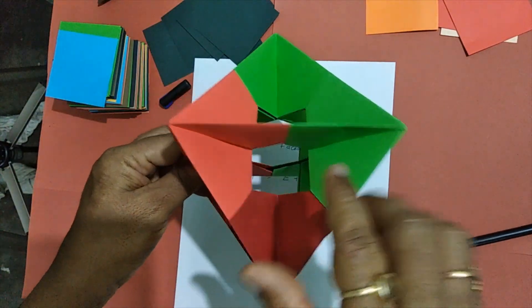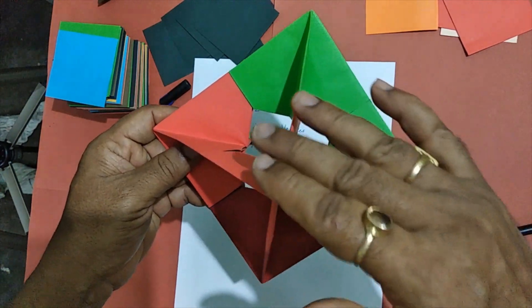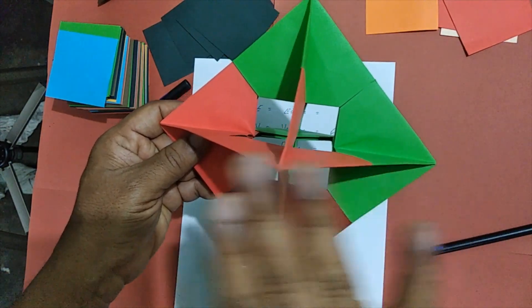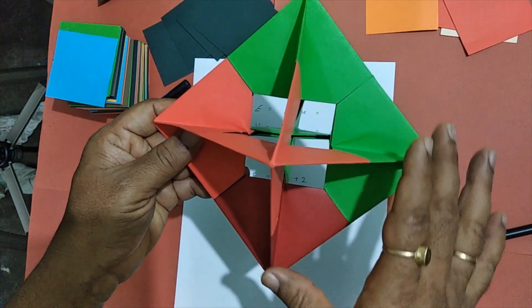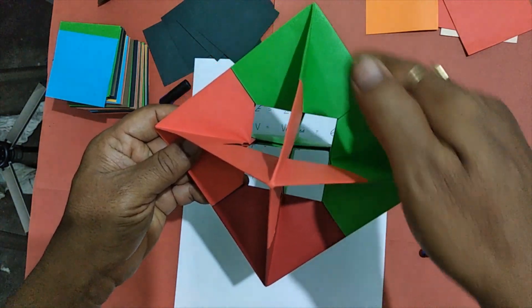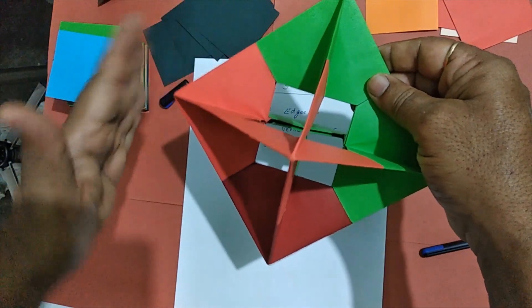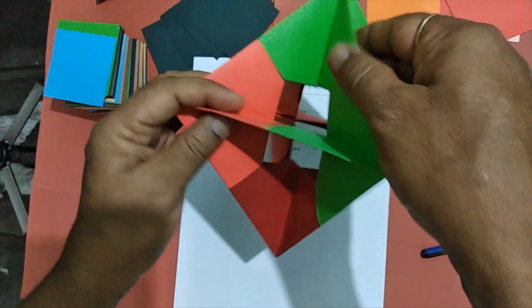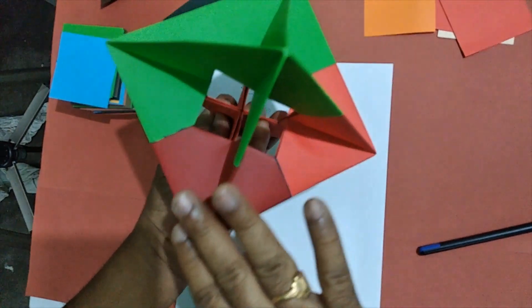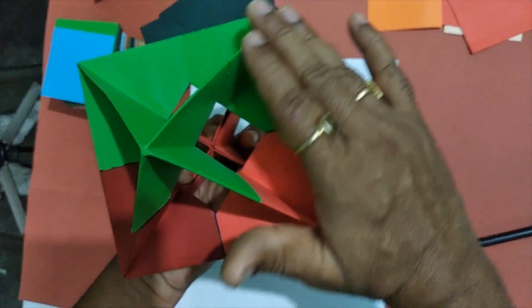Now let's count the number of edges. Four on this side. We have four edges at the center. And four edges on the other side. So we have totally 12 edges.